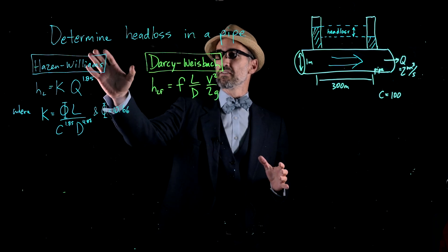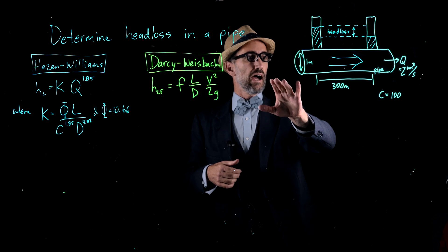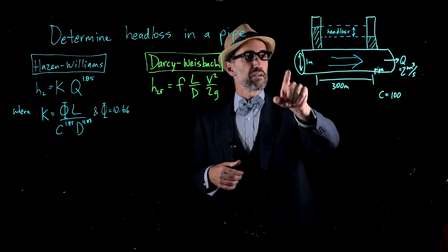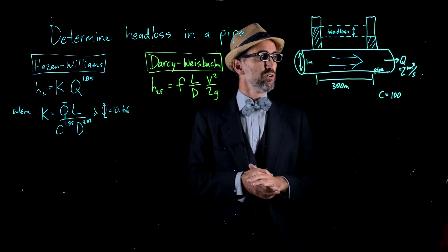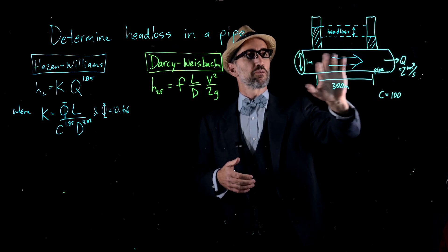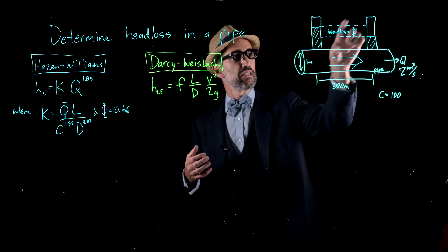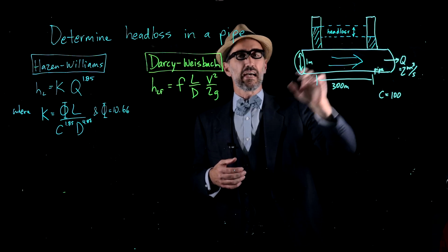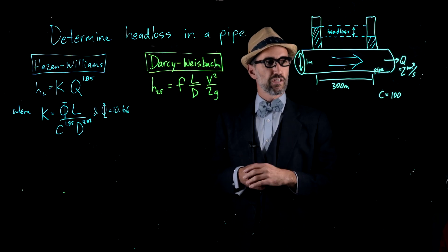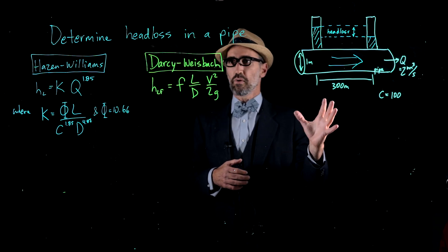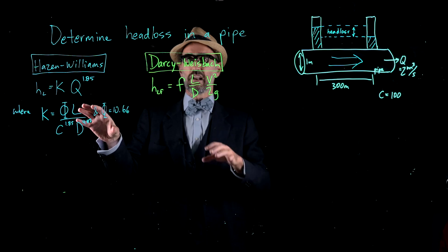In this video, you're going to learn how to determine head loss in a pipe. Here on this drawing, we have a 300-meter pipe that is 1 meter in diameter, with a volumetric flow rate Q of 2 meters cubed per second flowing through it. Because of friction within the pipe, we have some head loss, shown by two manometers at the top. The pipe has a coefficient C of 100 and is a smooth pipe. We'll use these to solve for head loss in two different ways.